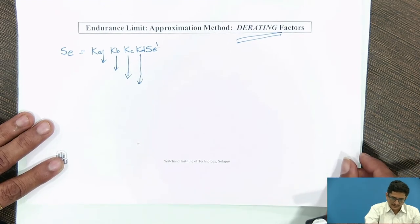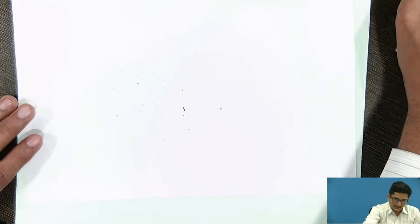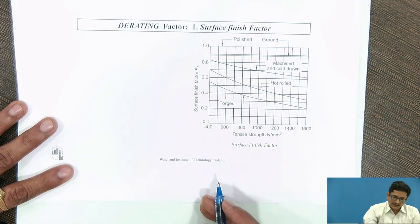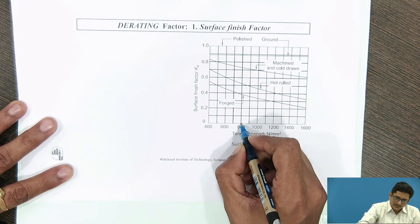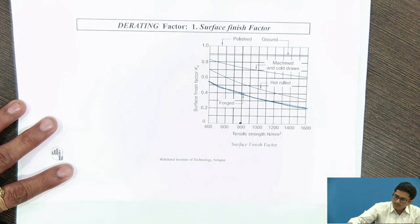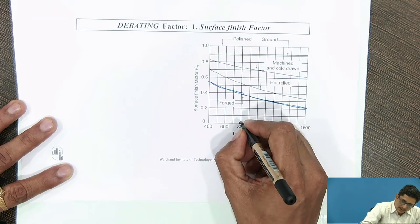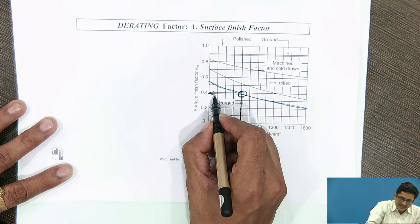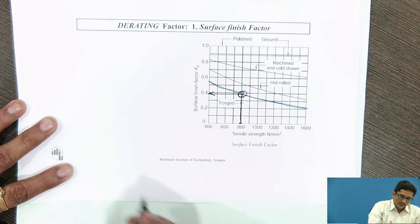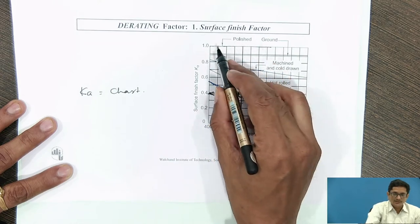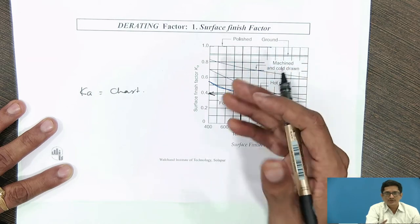The first derating factor is KA, called the surface finish factor. The reason is that the component is not polished to the same degree as the specimen. For example, if the ultimate tensile strength of the material is 800 MPa and the manufacturing method is forging, I find the intersection on the chart and read the surface finish factor on the Y-axis. If the component is polished, KA equals 1, which is the ideal case matching the specimen.